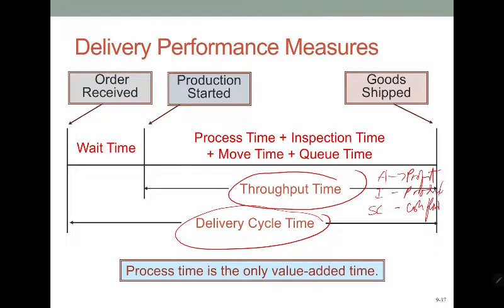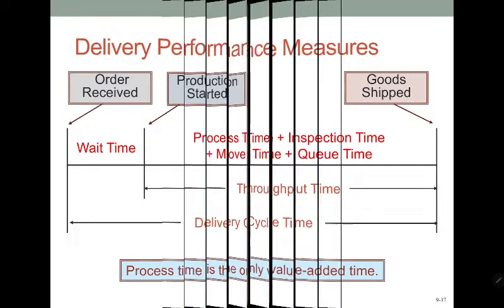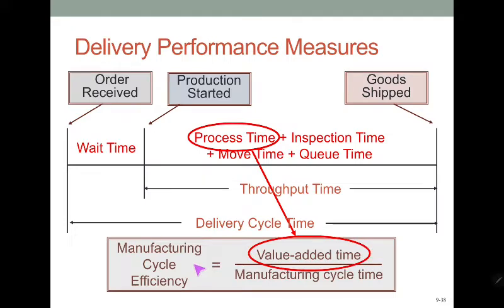The throughput time covers passing through the manufacturing process — from the physical starting point to the physical ending point of manufacturing. The delivery cycle time starts from when the order was placed. It looks at the proportion of production in terms of value-added and non-value-added activities. Manufacturing cycle time is the time it takes to complete a specific task from start to finish — from ordering to shipping.